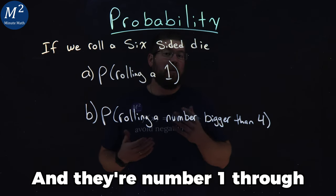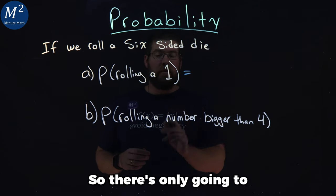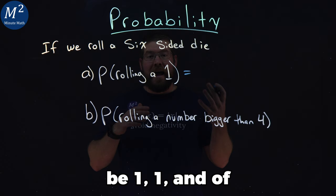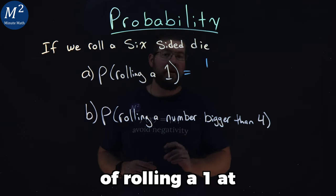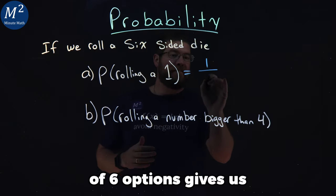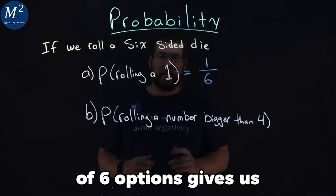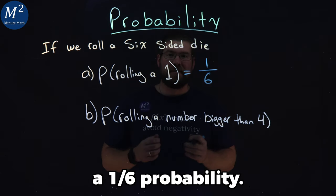Six-sided die, and they're numbered one through six. So there's only going to be one one out of the six. So we have the probability of rolling a one out of six options, gives us a one-sixth probability.